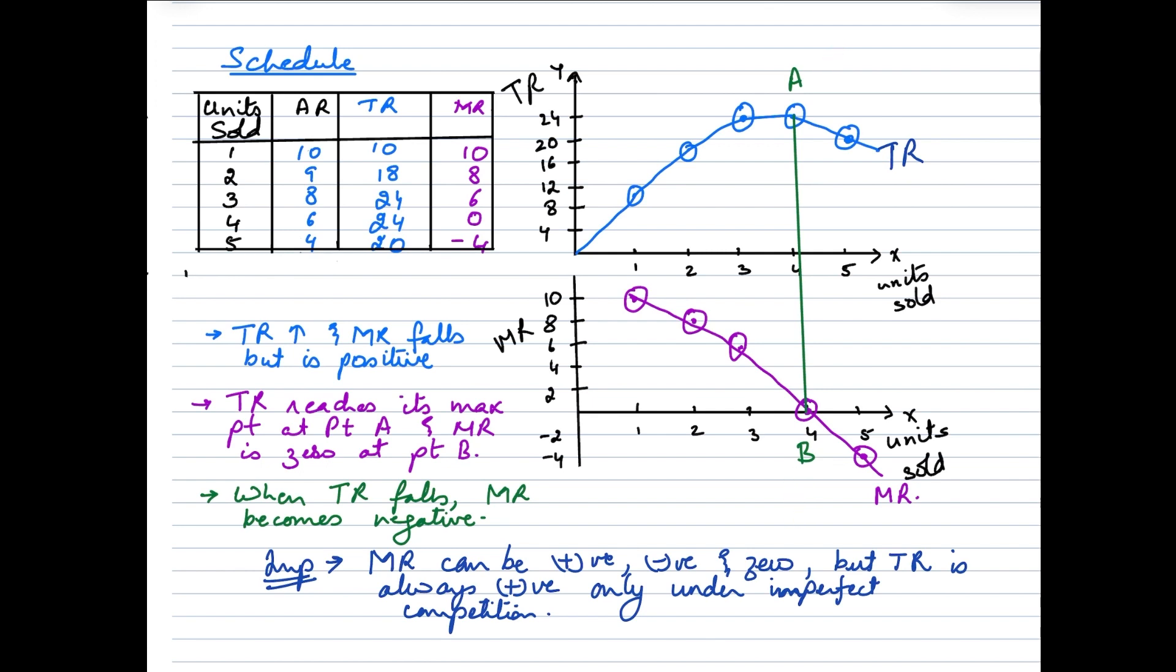Moving further, when we see that the total revenue falls, marginal revenue ends up becoming negative. These are the three things that we need to remember when we are talking about the relationship between TR and MR under imperfectly competitive markets.